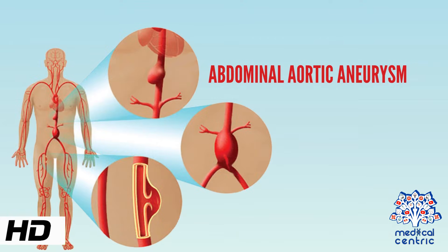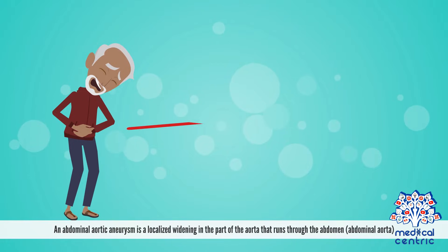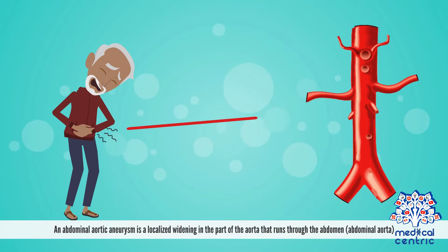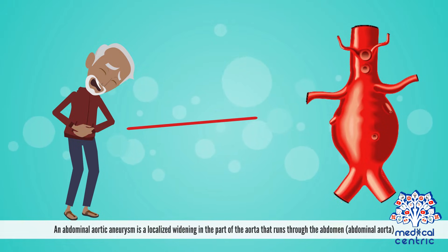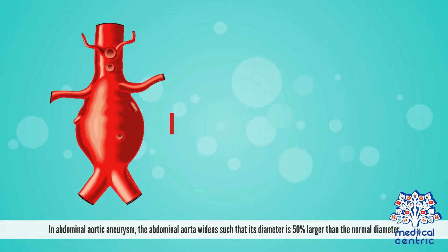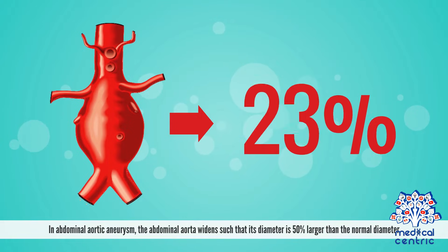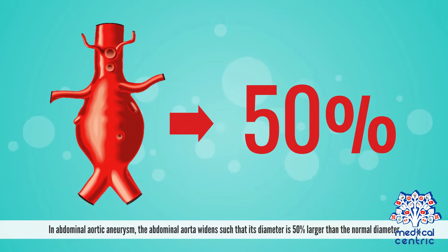Today's topic is Abdominal Aortic Aneurysm. An abdominal aortic aneurysm is a localized widening in the part of the aorta that runs through the abdomen, or the abdominal aorta. In abdominal aortic aneurysm, the abdominal aorta widens such that its diameter is 50% larger than the normal diameter.